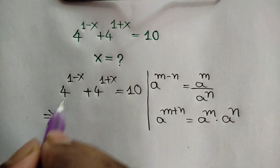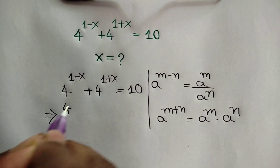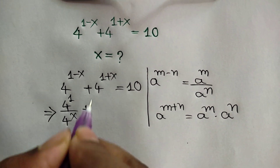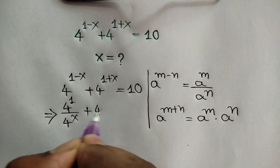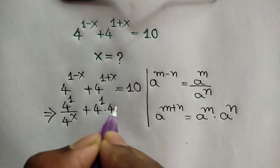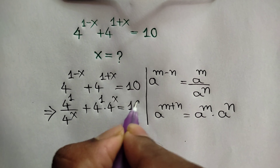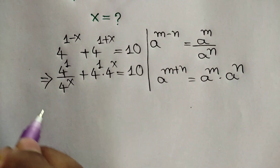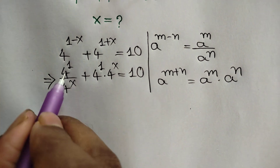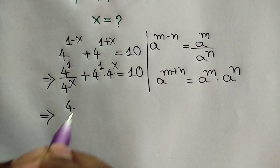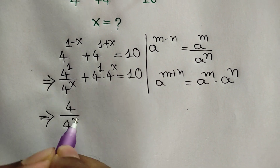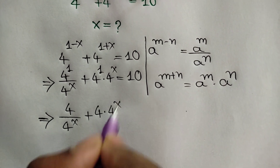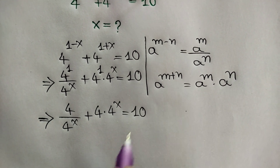So here we can write 4 to the power 1 over 4 to the power x, plus 4 to the power 1 times 4 to the power x, is equal to 10. That means 4 over 4 to the power x plus 4 times 4 to the power x is equal to 10.